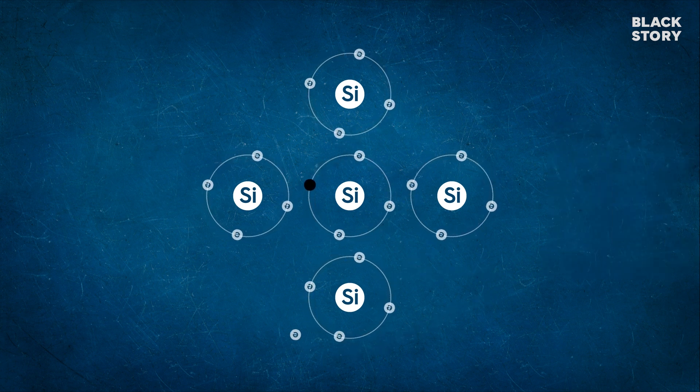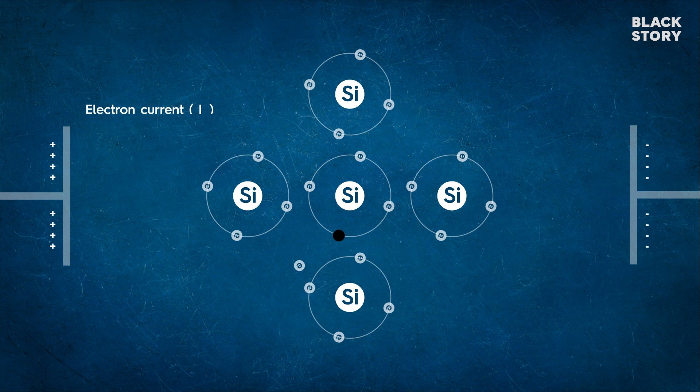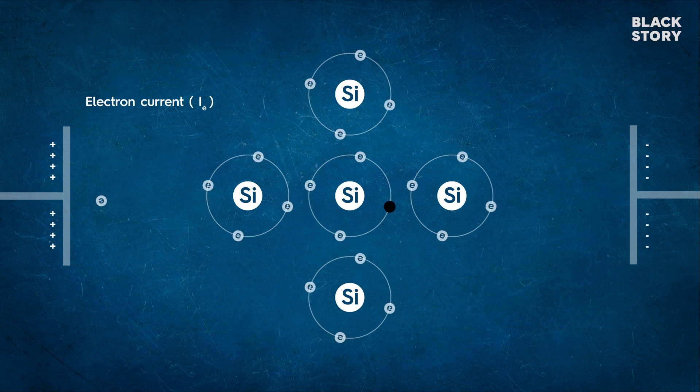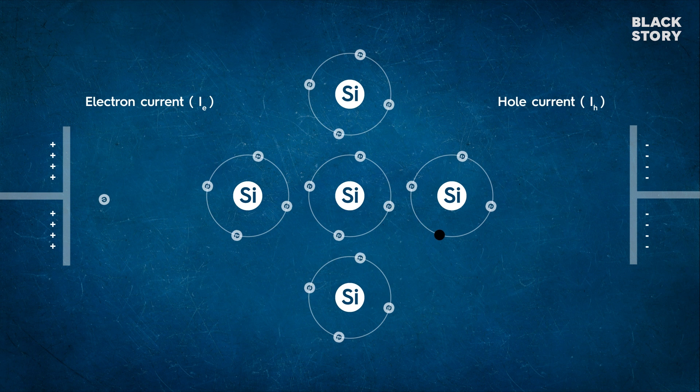The free electron moves completely independently as a conduction electron and gives rise to an electron current i_e under an applied electric field. Under the action of an electric field, these holes move towards negative potential giving the hole current i_h. Do not confuse this apparent movement of holes with the real movement of electrons. The total current i is thus the sum of electron current and the hole current.